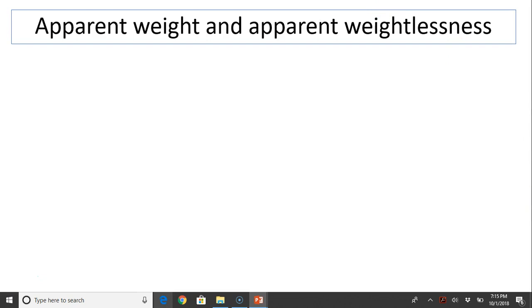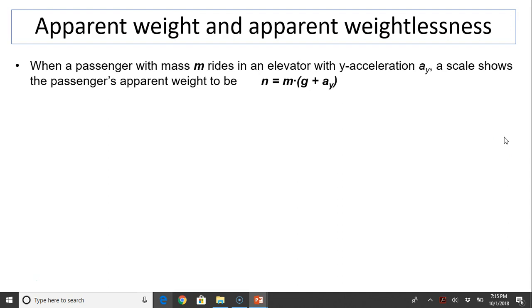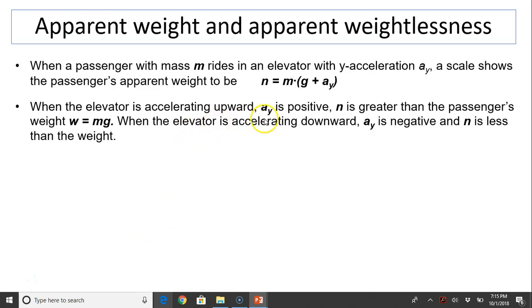Let's take a look at the concept of apparent weight and apparent weightlessness. When a passenger with mass m rides in an elevator with y-acceleration Ay, the scale shows the passenger's apparent weight to be n equals m times (g plus Ay). When the elevator is accelerating upward, Ay is positive, therefore n is greater than the passenger's weight. That's when you will feel heavier. When the elevator is accelerating downward, Ay is negative, therefore n is less than weight. So you feel lighter.